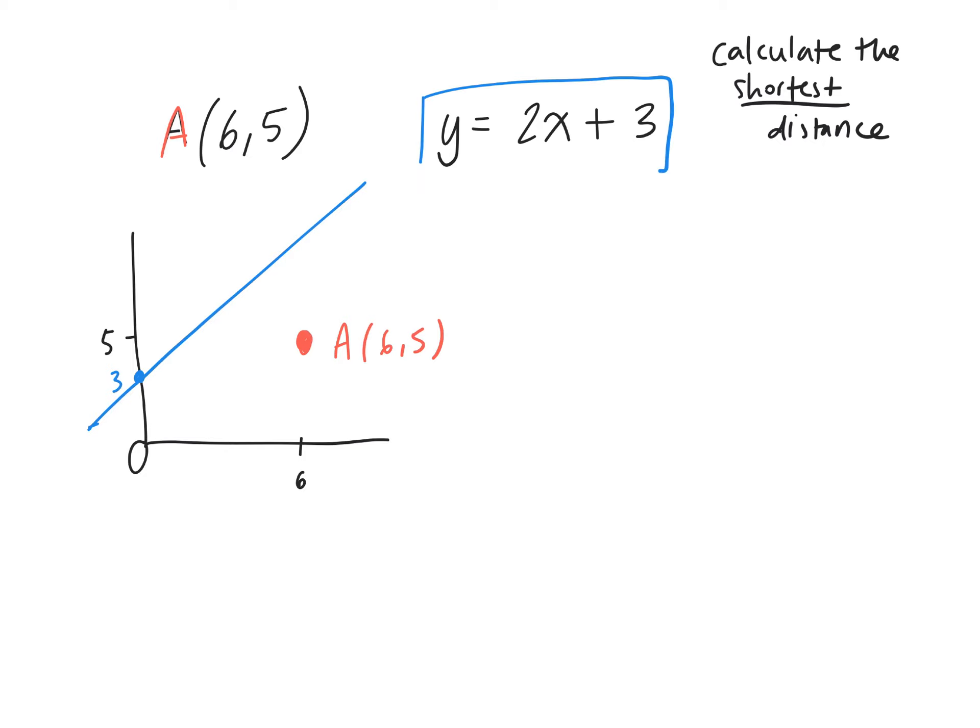We're given the equation of a line. So if you were to graph this, this is what it would look like. We start at positive 3, that's the y-intercept, and it rises by 2 over 1. I just drew a quick sketch of the graph.